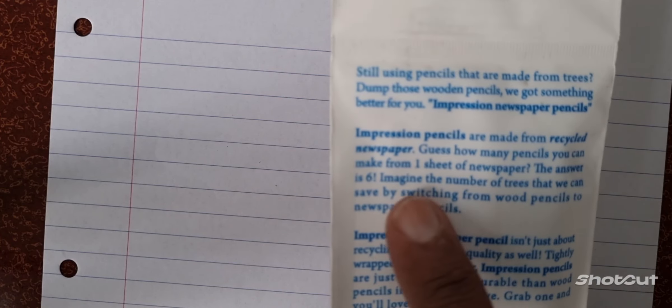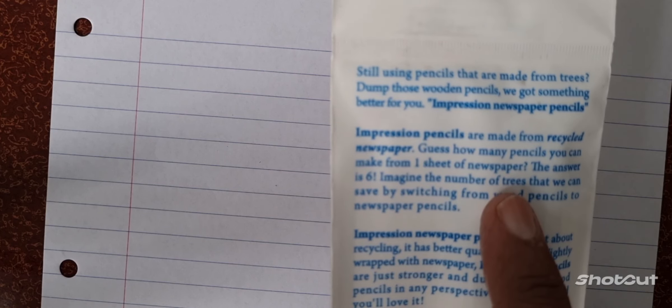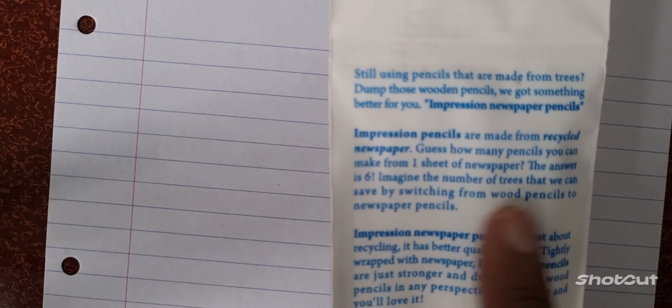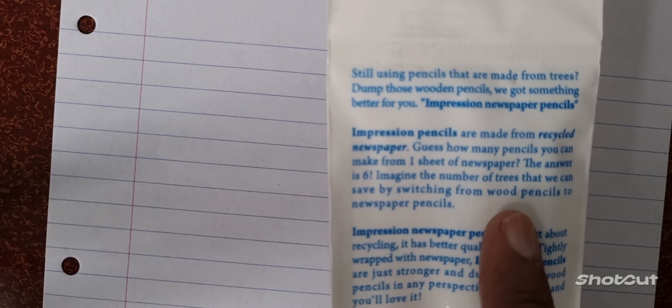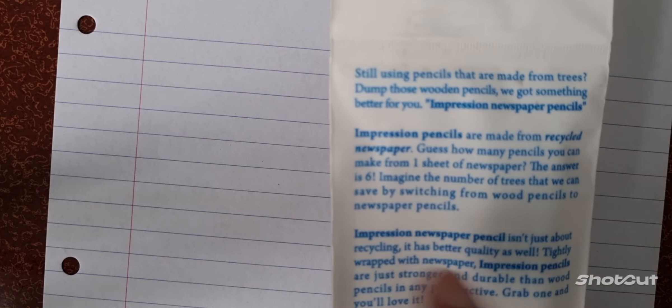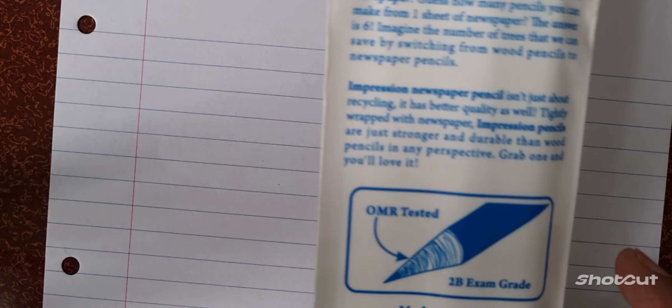That's amazing, isn't it? And guess how many pencils you can make from one sheet of newspaper? The answer is six. One sheet of newspaper you can make six pencils. Imagine the number of trees that we can save by switching from wood pencils to newspaper pencils.